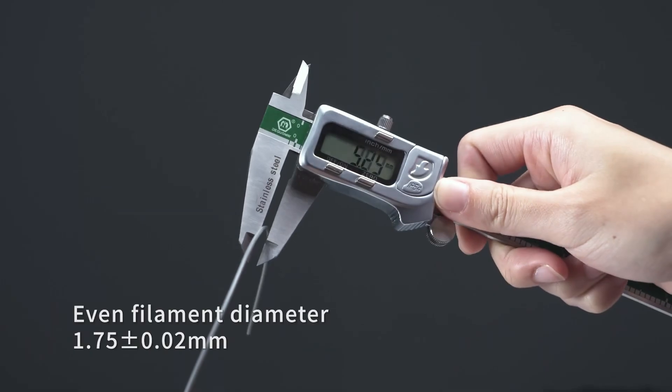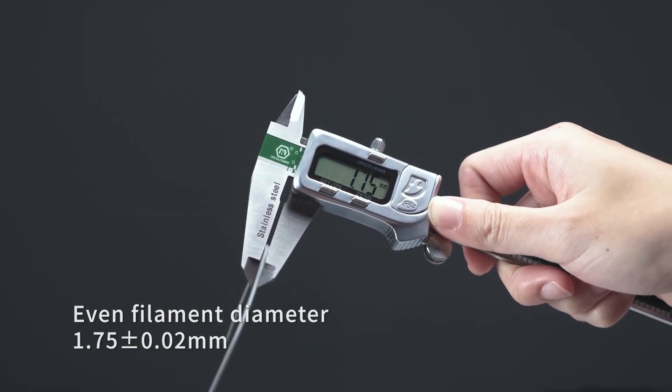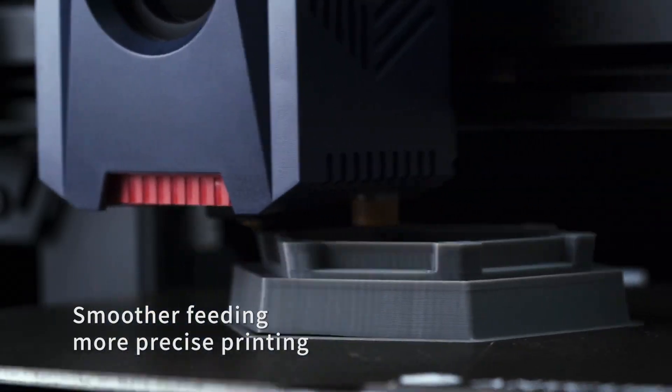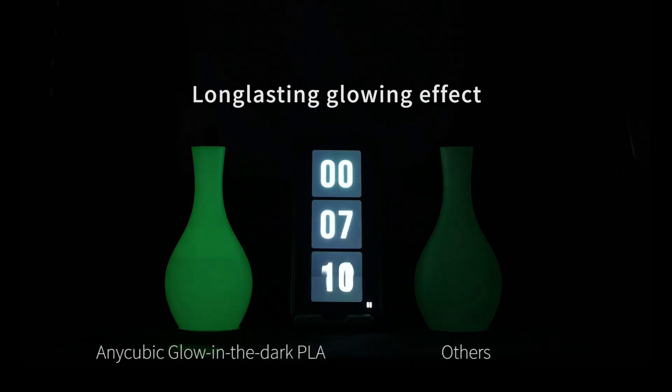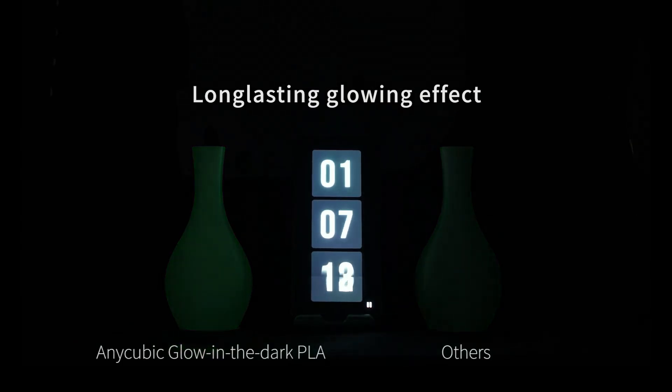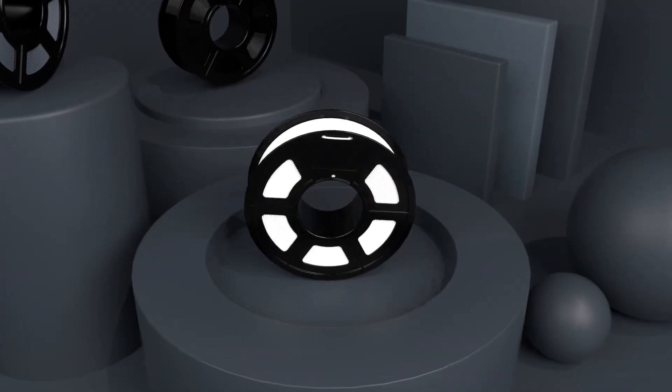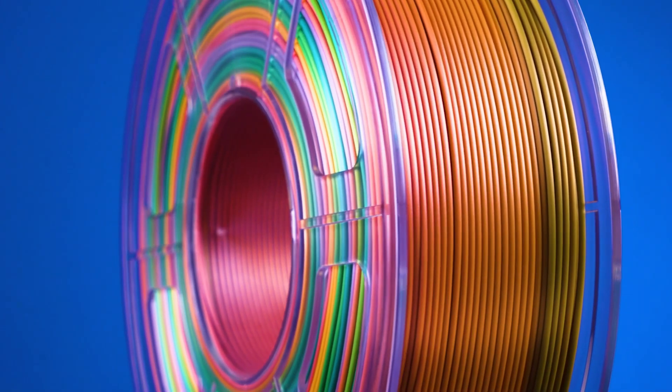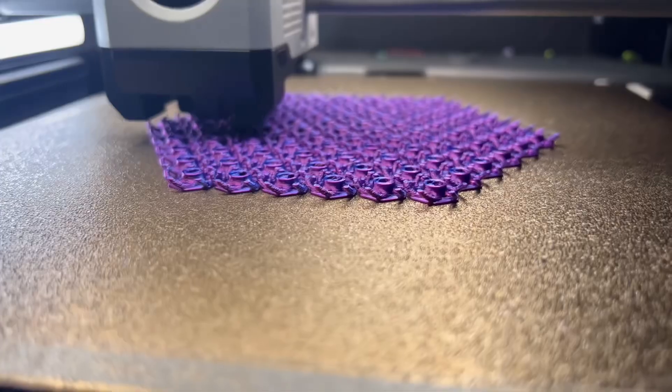So to summarize this all up, both PLA and PETG have their unique advantages and are suited for different applications. PLA is easier to print with and offers a wider range of colors and specialty options, and it's ideal for indoor use and low stress parts. PETG provides superior toughness, impact resistance, and higher temperature tolerance, making it suitable for functional and high stress applications.